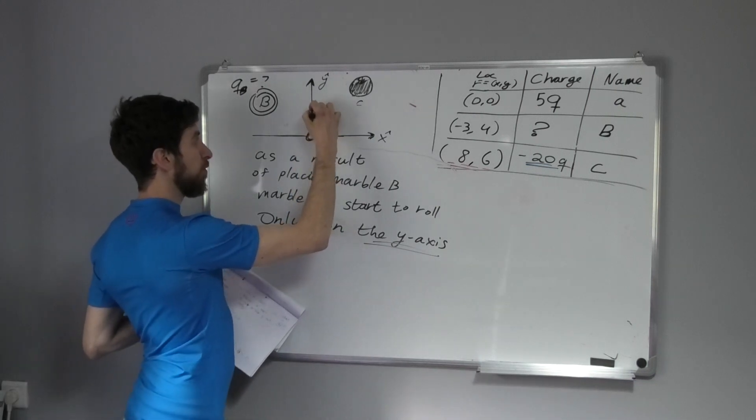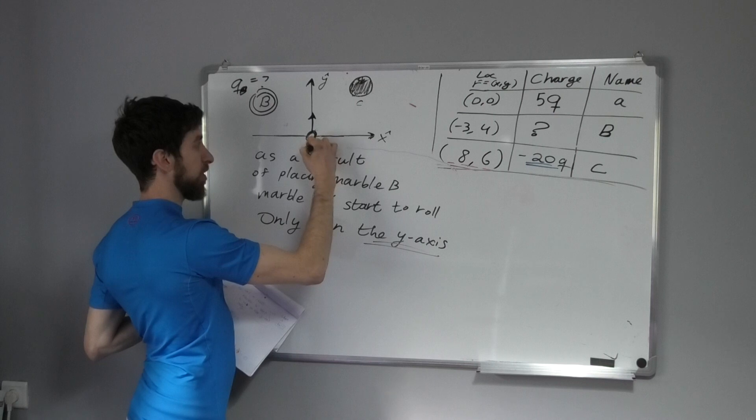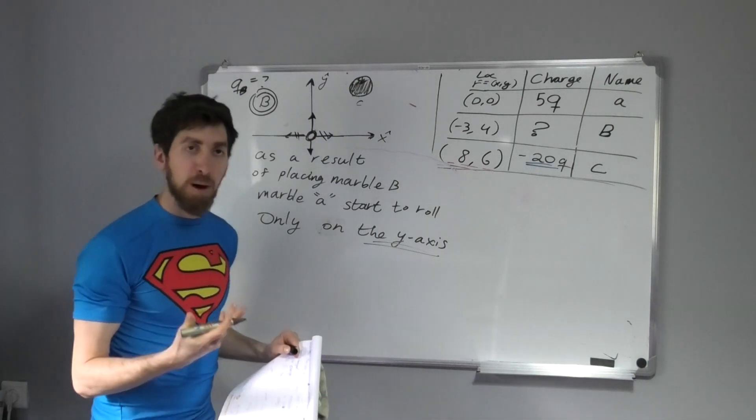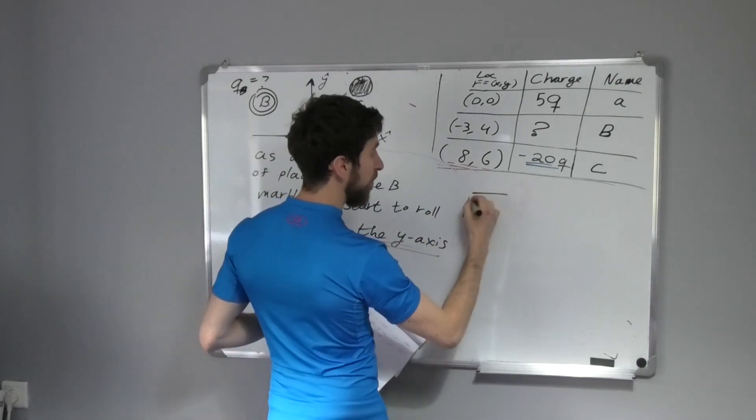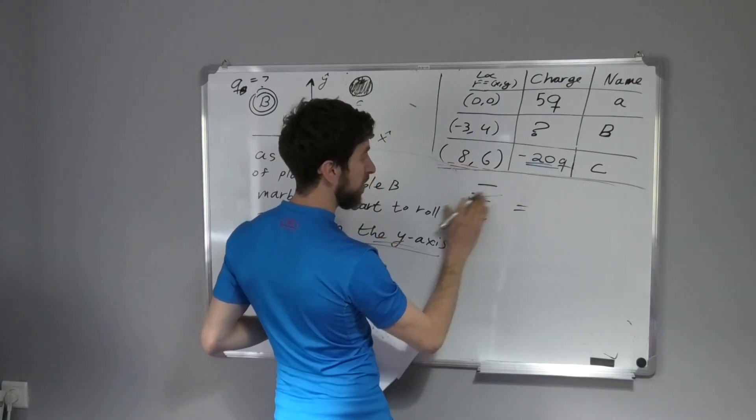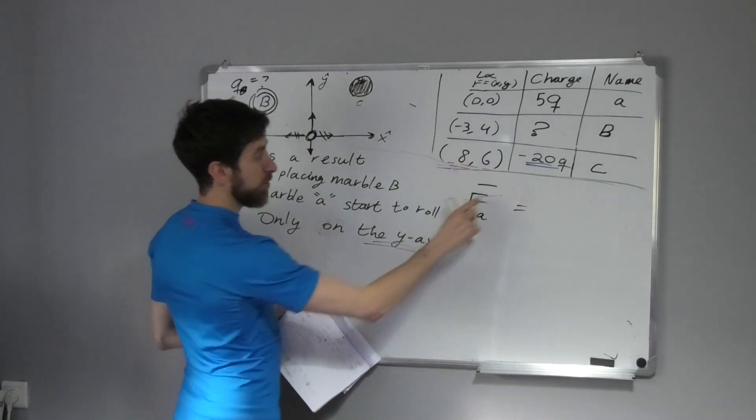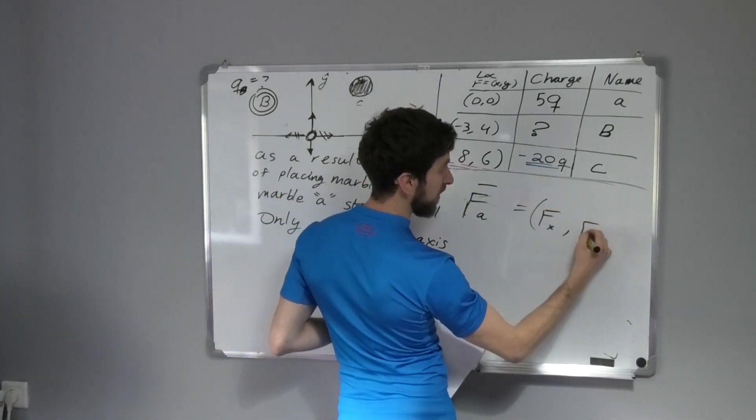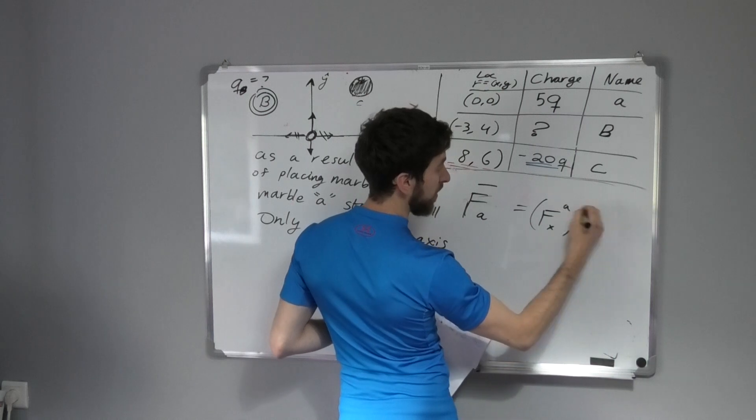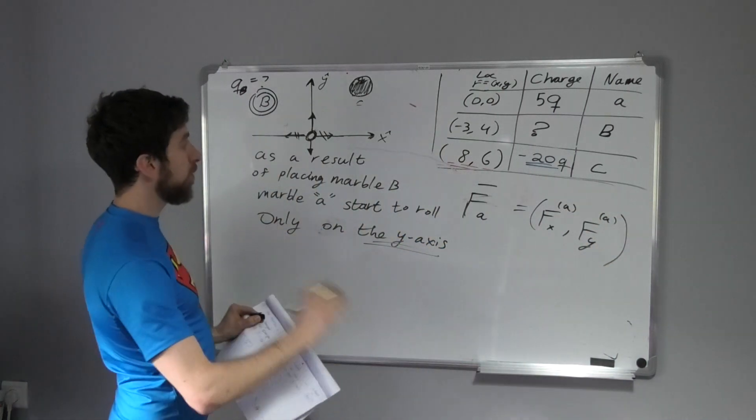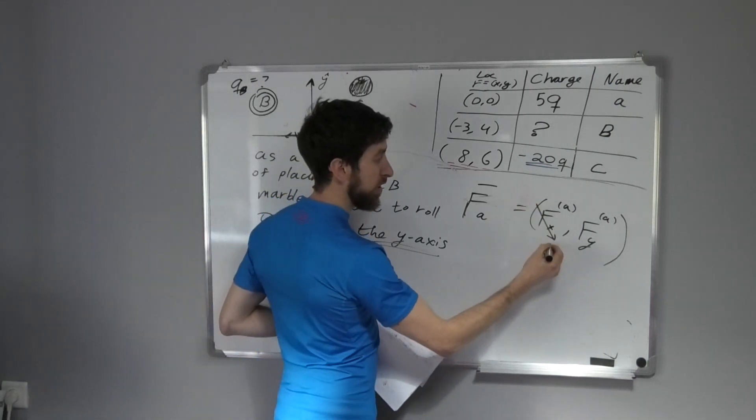This marvel moved only in this direction, not on this one or this one. So they're actually telling me something about the force. The total force on A has some x-component and some y-component, and they tell me there's no force in the x-direction—it equals zero.